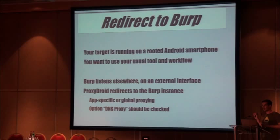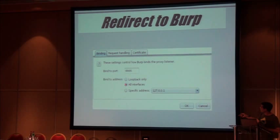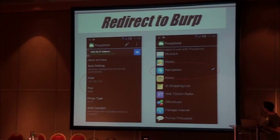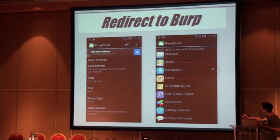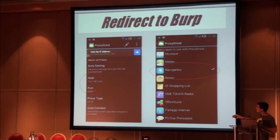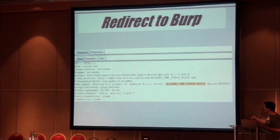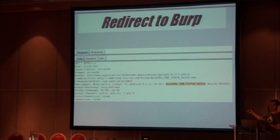ProxyDroid — sorry, the screenshots are in French. That's a browser with app-specific proxying configured to redirect to your remote Burp instance. The DNS proxy option is somewhat slower but you need to check it. You then see this kind of request in your Burp proxy coming from the smartphone. That's why it's useful to check the DNS proxy option — if you resolve DNS via your proxy (Burp), you can use the built-in HTTP request at burp/ to browse your proxy history from outside. That's also one of the risks of exposing your Burp listener to the outside world.